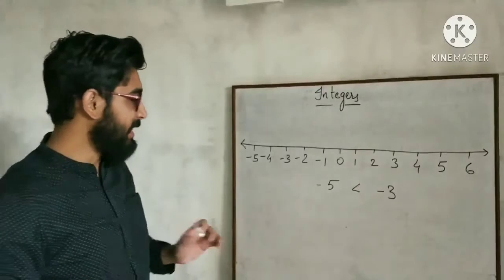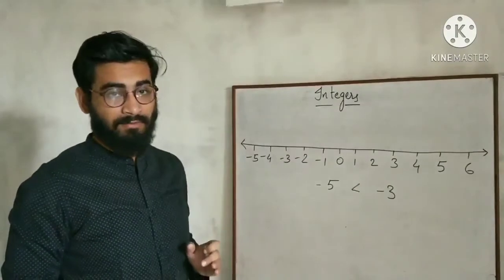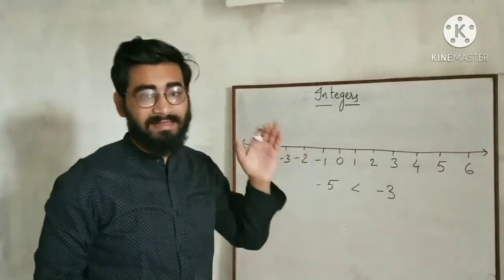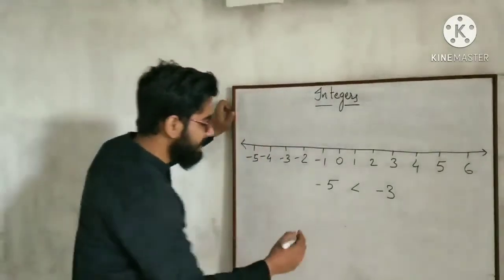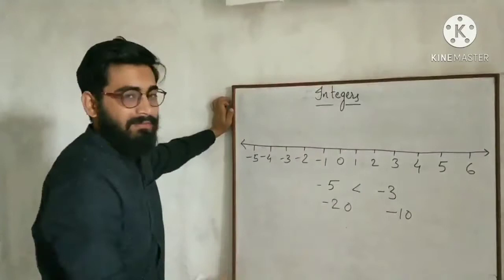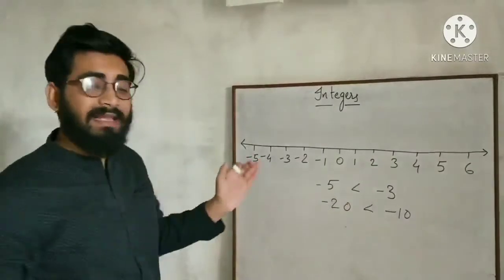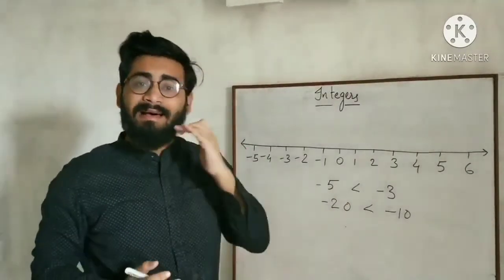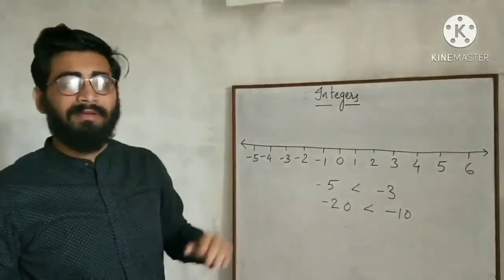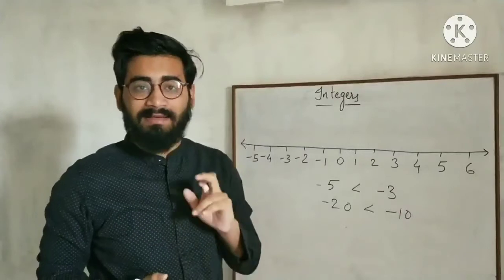One more thing: if you look at minus 5 and minus 3, which number is having less negative value? Minus 3 is having less negative value, that's why minus 3 is greater. Similarly, out of minus 20 and minus 10, which number is greater? Minus 10 is greater, because if you extend the number line, minus 10 will be at the right side. Always remember that the number at the right side will be greater than the number at the left side on the number line.